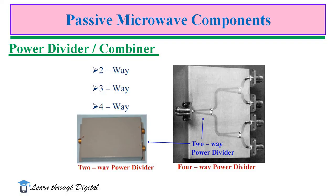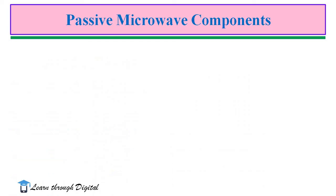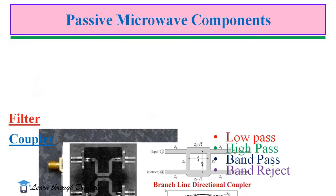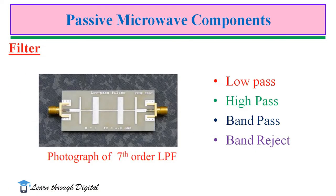Other passive microwave components include microwave dividers and combiners. The divider may be two-way, three-way, or four-way — it divides the power to particular microwave components. There are also various types of couplers, such as branch-line directional couplers and coupled-line directional couplers. Filters are a prime example of passive microwave components; there are various types including low-pass, high-pass, band-pass, and band-reject filters. This photo illustrates a seventh-order low-pass filter, which also adopts printed circuit technology.